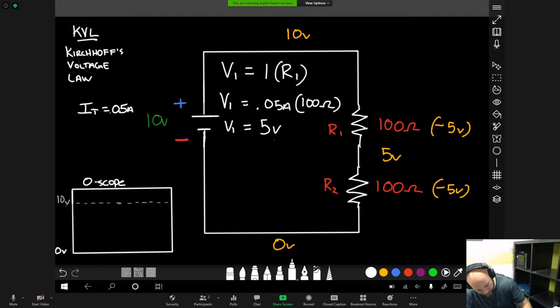So because the resistance values are the exact same, we know that R2 is going to be the exact same. V2 is 5 volts. So what we're seeing here is 5 volts dropping across this resistor, 5 volts dropping across this resistor, and this equals the 10 volts of potential that the battery provided. So this is really what this law comes down to.